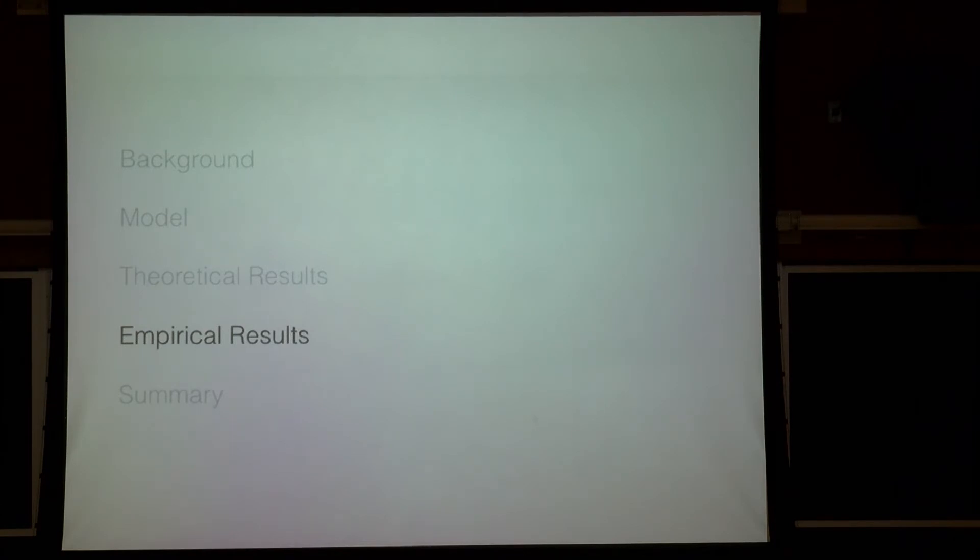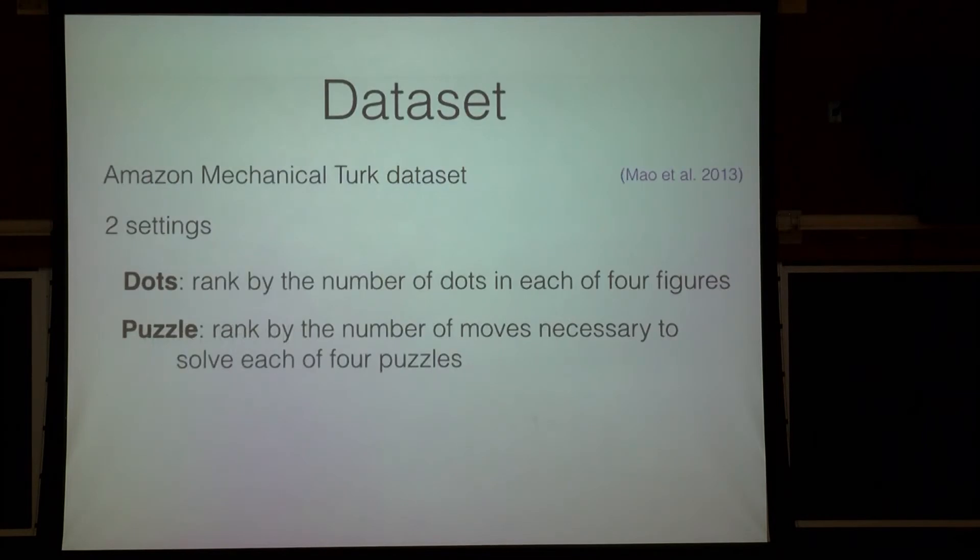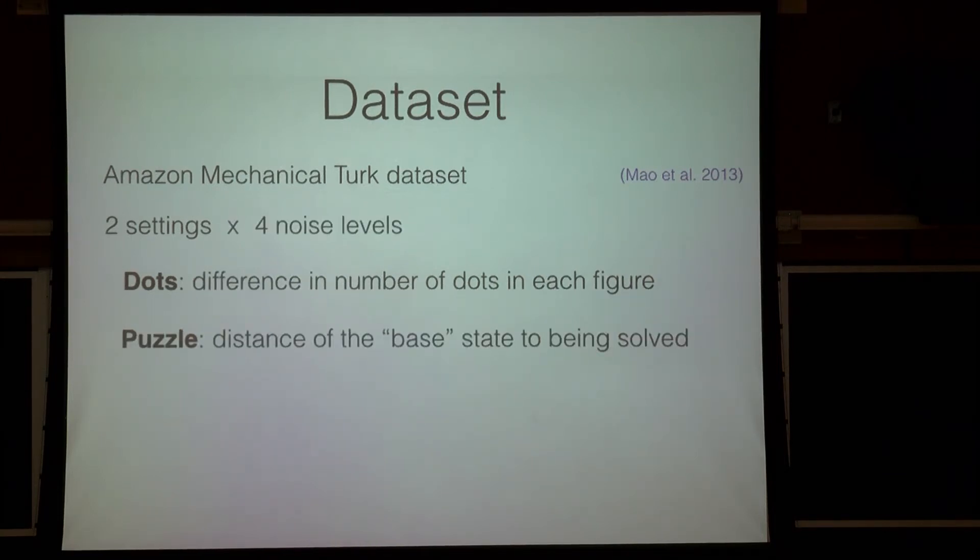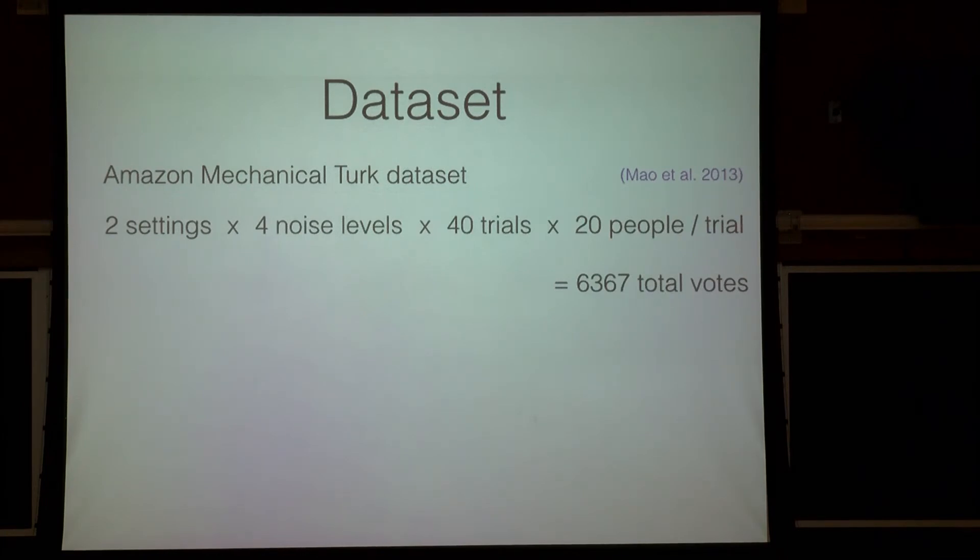And now, for the second half of our results, we actually did all this in practice and looked at a data set that was collected in 2013 by Andrew Mao and collaborators. And in this setting, there are two settings. The first is what we call dots. And you want to rank, essentially, four things, four puzzles, by the number of dots in the four figures. And the second thing is what we call puzzle, where you want to basically rate the distances of an eight puzzle from being solved. So, as an example, let's just say I give you four pictures. I say to rank them from least to most amount of dots. These pictures will be parameterized by a noise parameter, which is essentially the difference in the number of dots per. So, in the settings, we always started with 200 dots and then went up by increments of three, five, seven, or nine. And so, for each setting, there are four noise levels. It's not really important why these noise levels matter, but just know that the noise or essentially the noisiness of the data can be parameterized by exactly one number, which is very nice. And each one of these has 40 trials and 20 people per trial. So, we have a lot of votes. We have almost 6,400 votes.